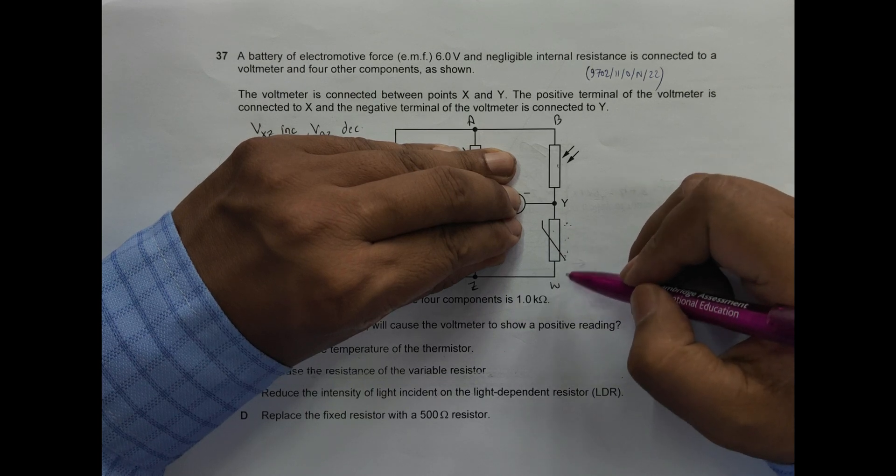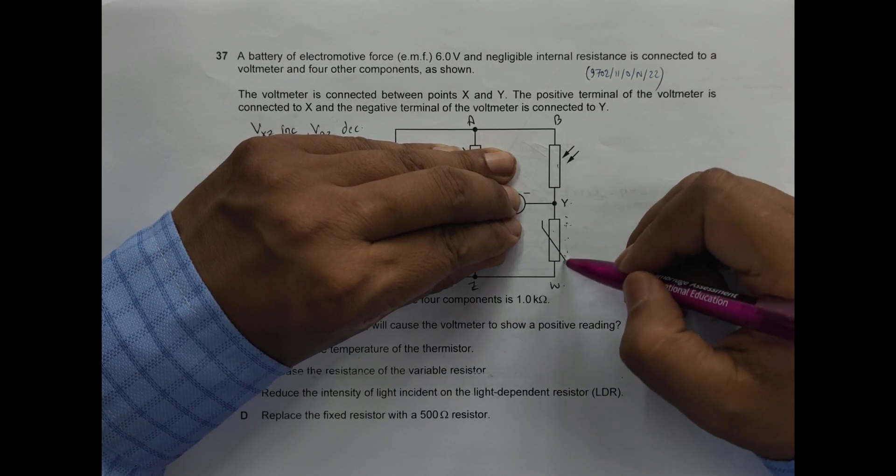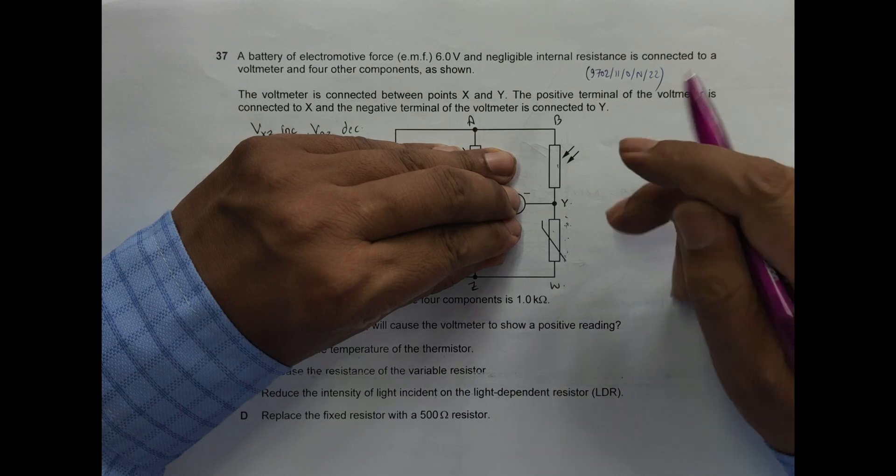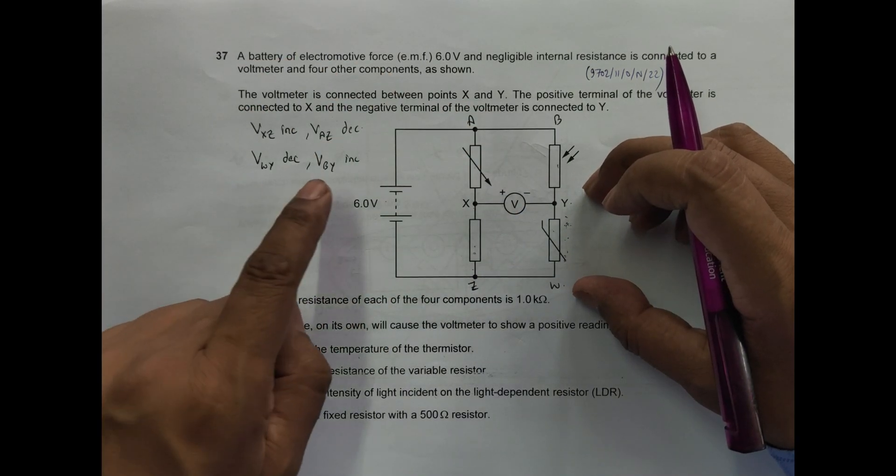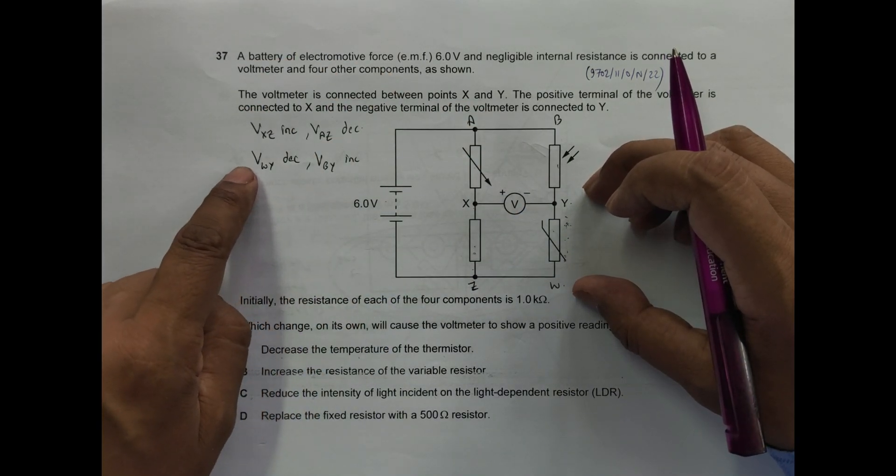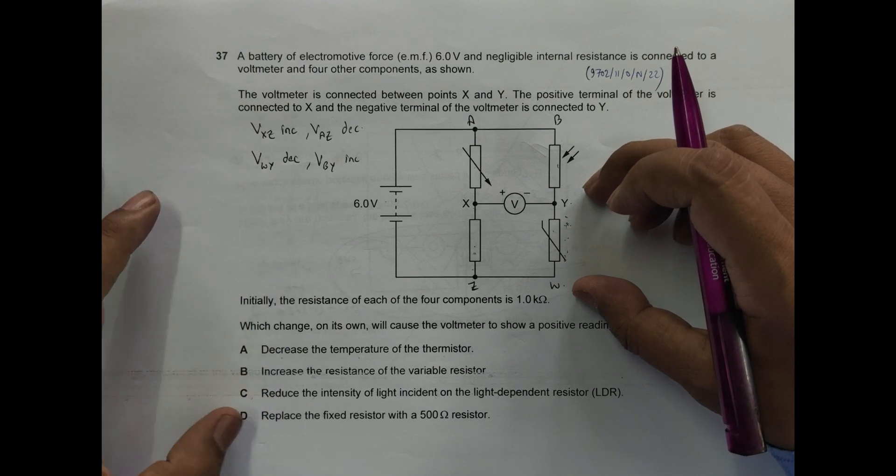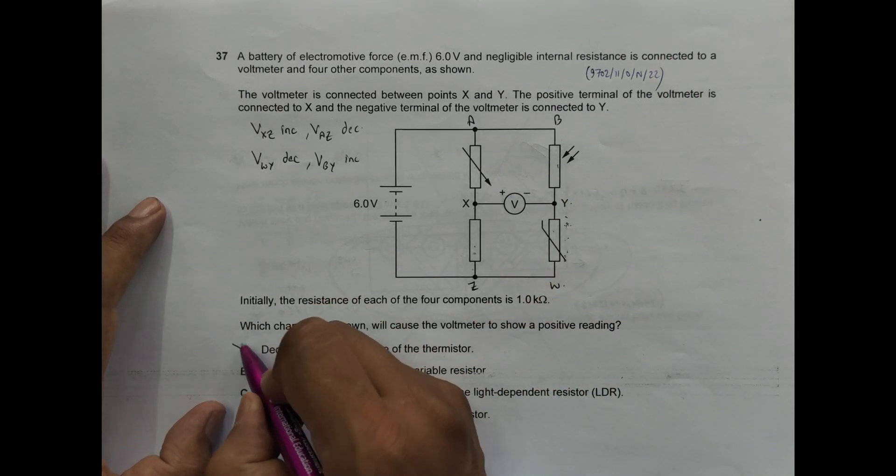So if I apply the voltage divider principle here, if its resistance increases then the Vyw or Vwy will also increase. So Vyw also increases. So if I go through here, we have to have Vwy decrease. We need to decrease Vwy, so this is incorrect.